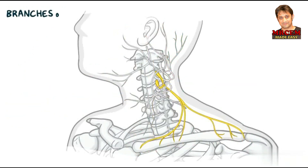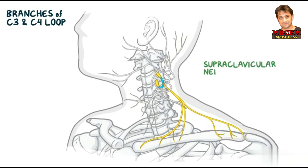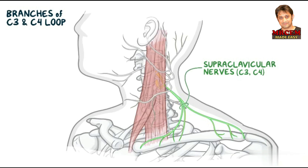The branches of the cervical plexus that arise from the C3 and C4 nerve loop are the supraclavicular nerves, which contain fibers from C3 and C4 and emerge as a common trunk deep to the SCM. These branches send smaller branches to the skin of the neck that cross the clavicle and supply the skin over the shoulder.